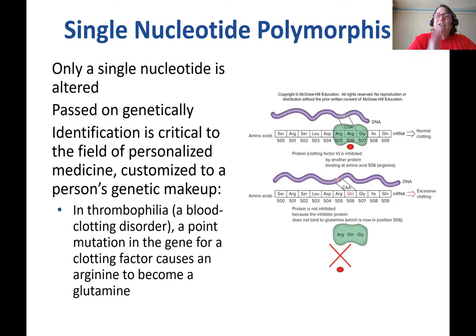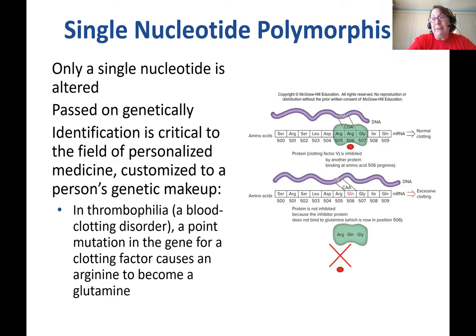Individual nucleotides that are mutated are referred to as single nucleotide polymorphisms, or SNPs. Only a single nucleotide is altered, and these tend to be passed on genetically. When looking at connections between genetic background and disease, SNPs are one of the key things we look at. Identification of SNPs is critical to the field of personalized medicine, customized to a person's genetic makeup. Thrombophilia, a blood clotting disorder, is one disease in this SNP-based model.